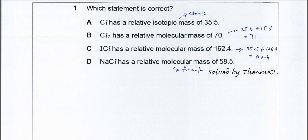For this question we go through one by one to find which one is correct. Chlorine has a relative isotopic mass of 35.5. This one is wrong because isotopes of chlorine are most likely 35 or 37.